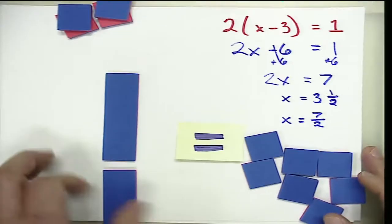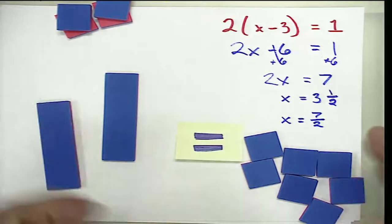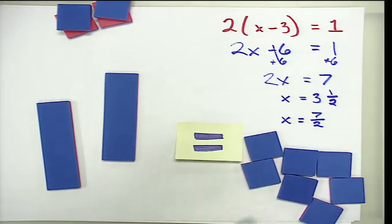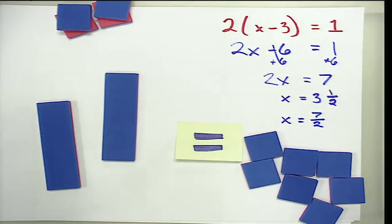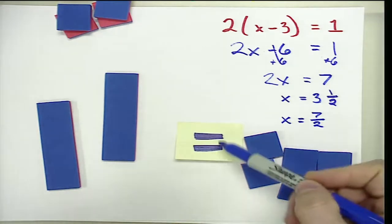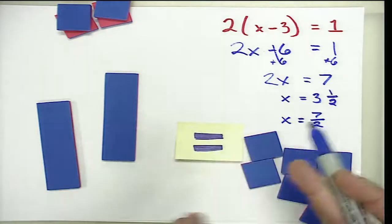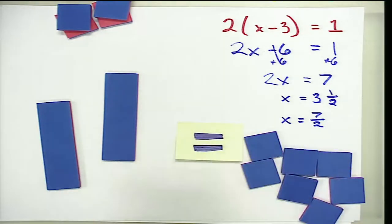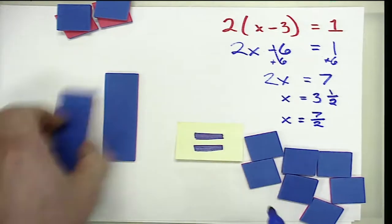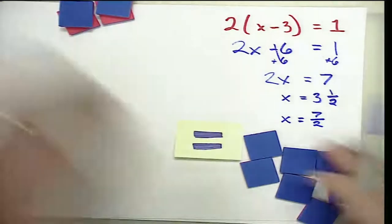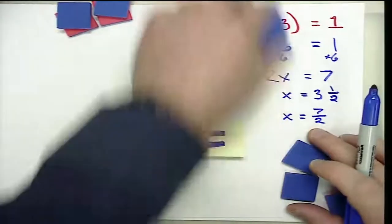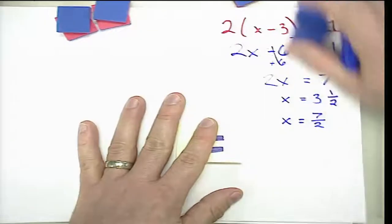Really nothing new here — we interpreted the distributive property and combined like terms just as before, applying integer rules. The only truly new element is the equal sign and the use of inverse operations. Let's clear the board and look at one more example.